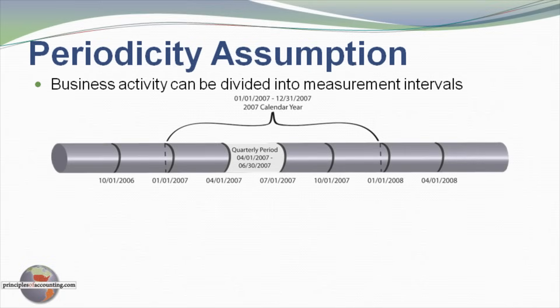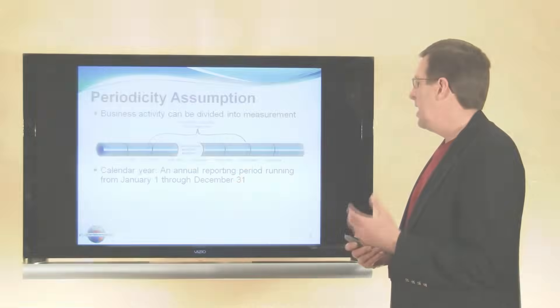In this particular illustration I'm showing how this tube represents time going on, with transactions and events flowing through the tube, but we need to cut off and look at segments of that particular tube, such as a quarterly period — April 1 through June 30th in this particular case.